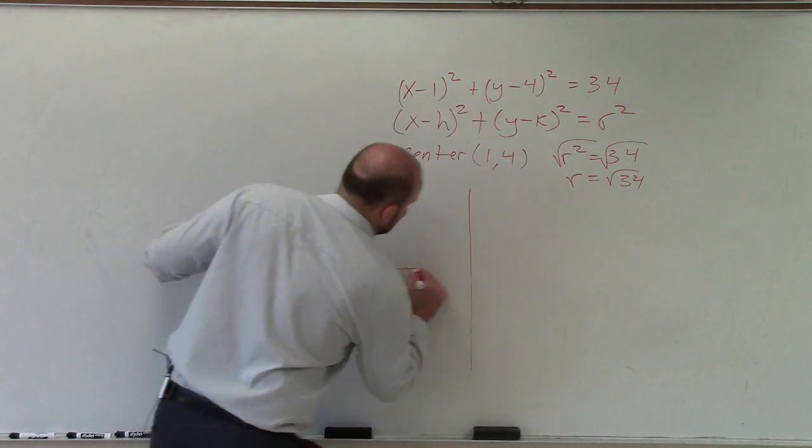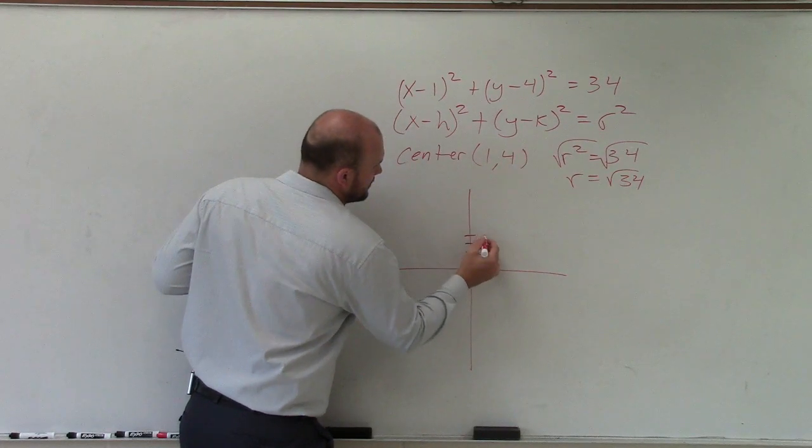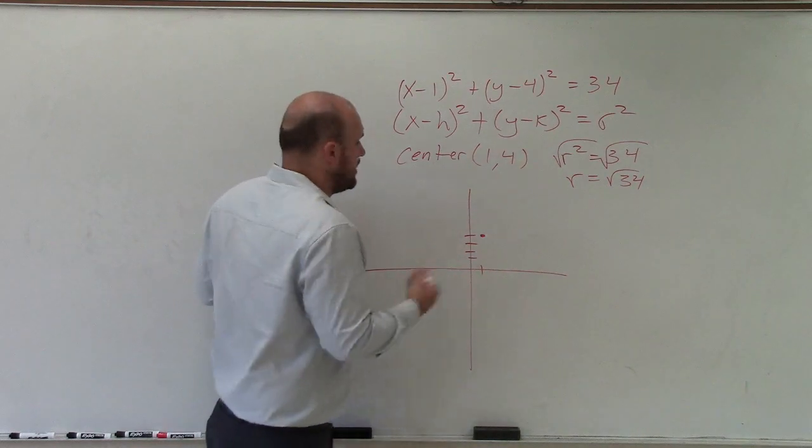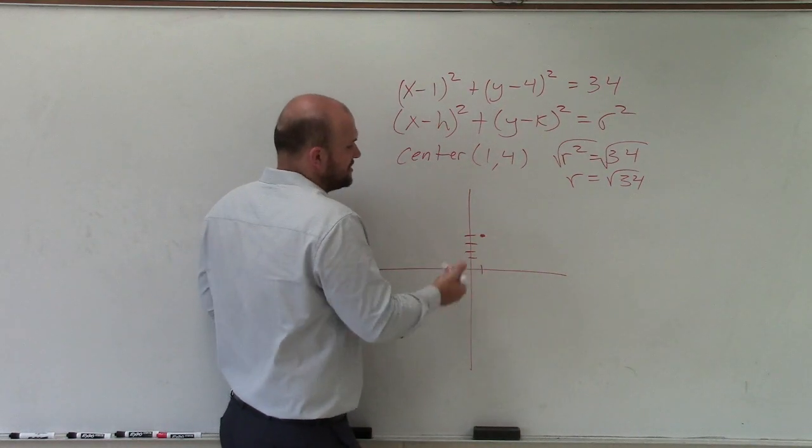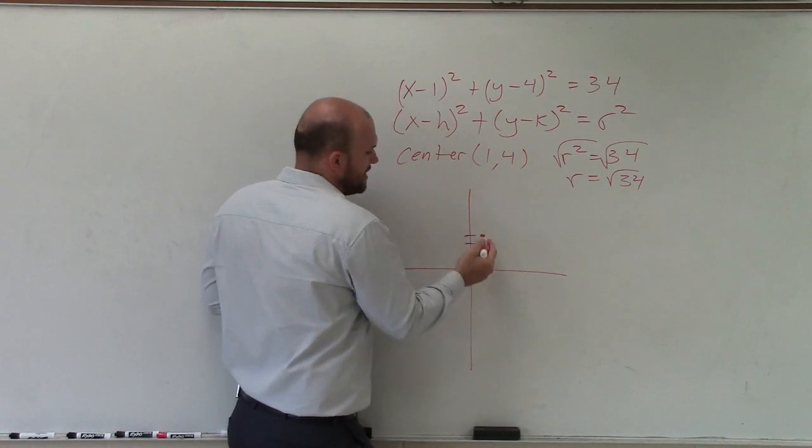Now to graph this, I first find my center, which is (1, 4). And then again, I said it's like 5 and a decimal. You can use your calculator if you'd like, but I'm just estimating. So it's roughly going to be 5 and a half, a little bit larger than 5 and a half in all directions.